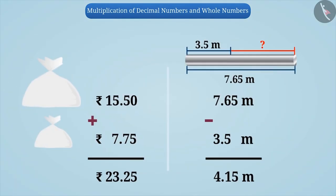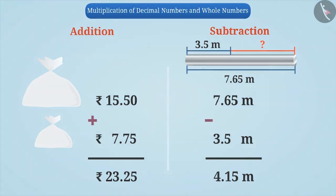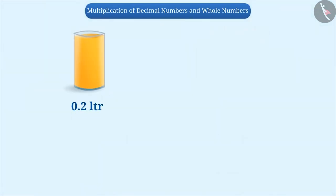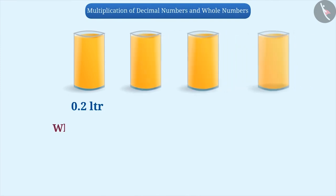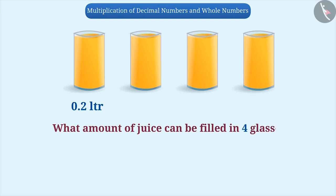We have learnt addition and subtraction of decimal numbers in previous classes. Now we will learn to multiply them. Consider that 0.2 liters of juice can be filled in a glass. If we need to know the amount of juice that can be filled in 4 glasses, then we need to multiply 0.2 and 4.